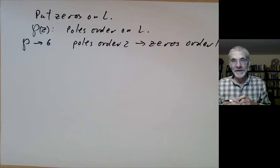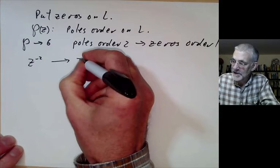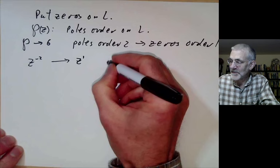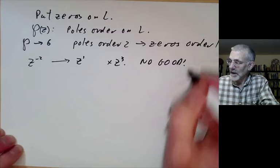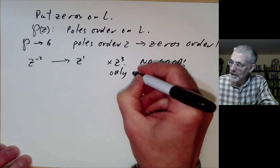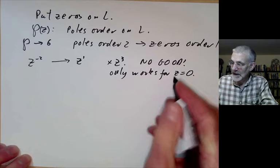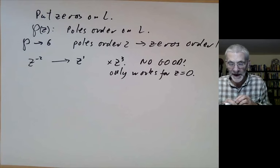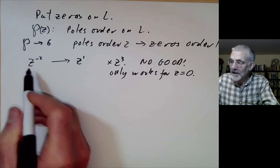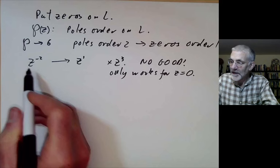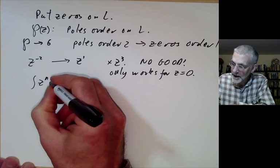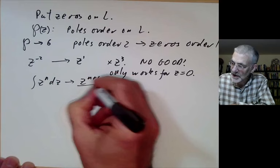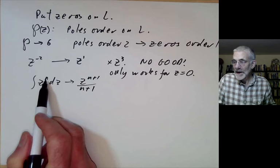So how do we convert a pole of order 2 into a zero of order 1? Here we've got a pole of order 2, and an obvious way to convert it into a zero of order 1 would be to multiply by z cubed. Well, this only works for the zero at z equals zero — for all the other zeros at all the other lattice points, multiplying by z cubed will just turn them into a slightly more complicated pole. There's another way to convert z to the minus 2 to z to the minus 1: we recall that the integral of z to the n dz becomes z to the n plus 1 over n plus 1. So we can raise the exponent by 1 by integrating.